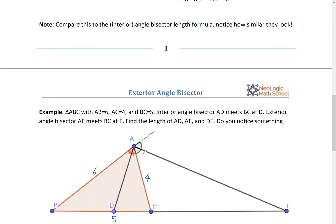All right. And this time, I'm going to make things a little bit more complicated. I draw exterior bisector as well. AE. All right. So this angle equal this angle. All right. I want to find out the length of AD. I want to find the length of AE. I also want to find the length of DE.